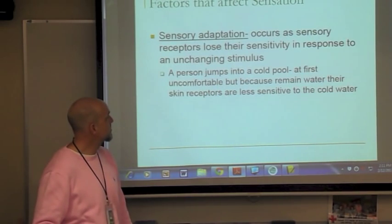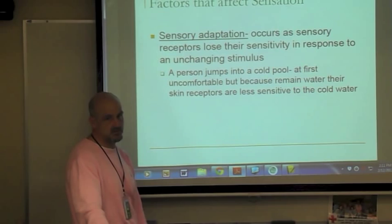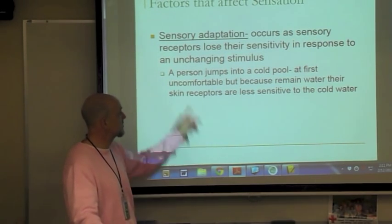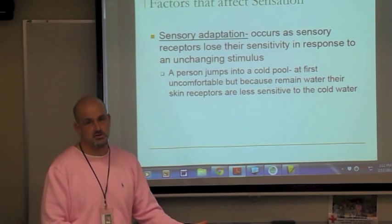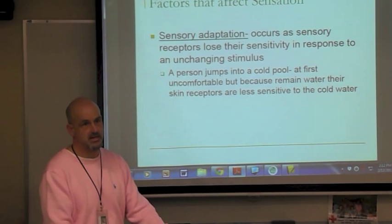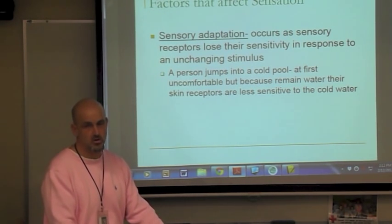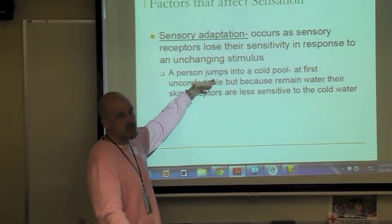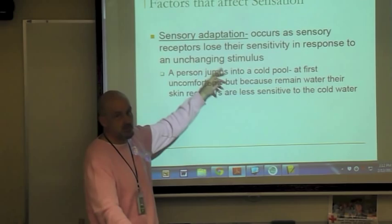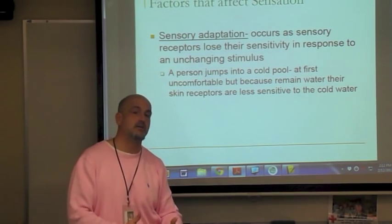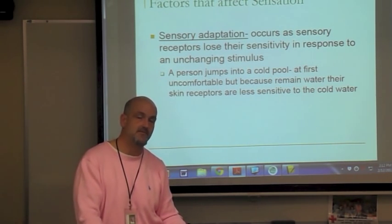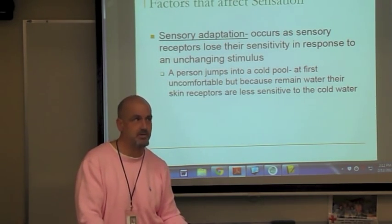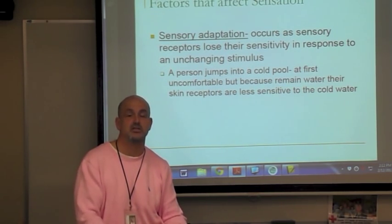Sensory adaptation occurs when sensory receptors lose their sensitivity in response to an unchanging stimulus. A classic example: when you jump into a cold pool, your sensory receptors initially report the temperature change. But as you stay in the water — an unchanging stimulus — you lose sensitivity and adapt. Someone jumping in 20 minutes later will notice the cold because their senses haven't adapted yet.